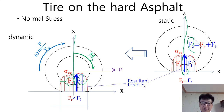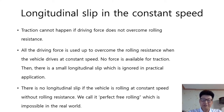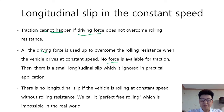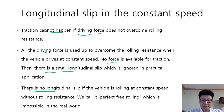To maintain constant vehicle speed, a vehicle needs some pulling force. Is there a longitudinal slip at constant speed? Traction cannot happen if the driving force does not overcome rolling resistance. All the driving force is used up to overcome rolling resistance when the vehicle drives at constant speed — no force is available for traction. There is then a small longitudinal slip, which is ignored in practical applications. There is no longitudinal slip if the wheel is rolling at constant speed without rolling resistance — we call it perfect free rolling, which is impossible in the real world.